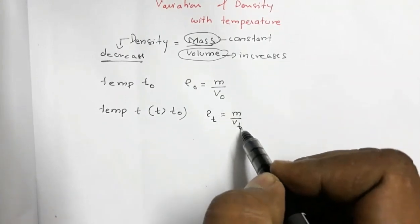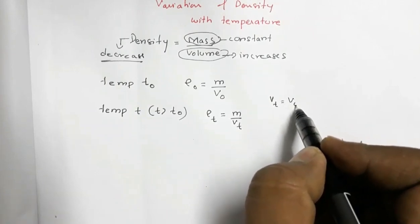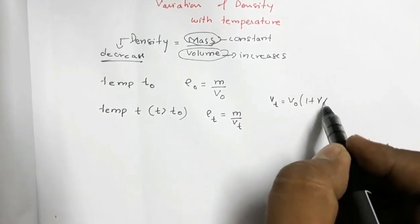So now VT and V0, they are related by the relation VT is equal to V0 times 1 plus gamma delta T.